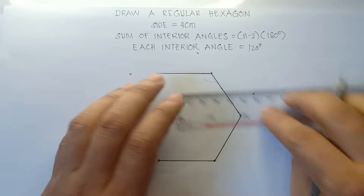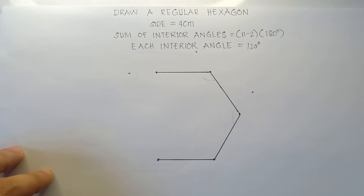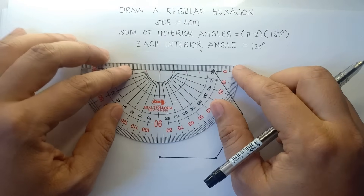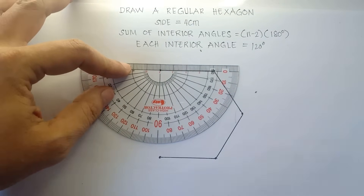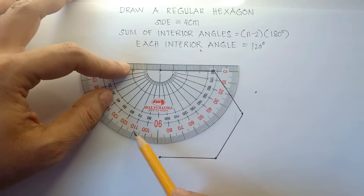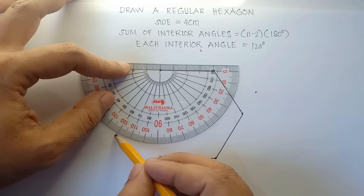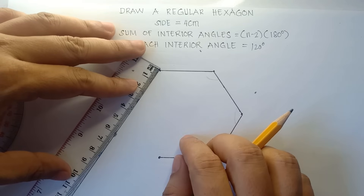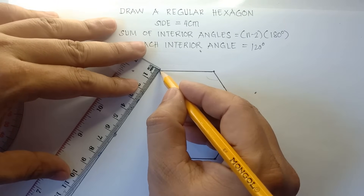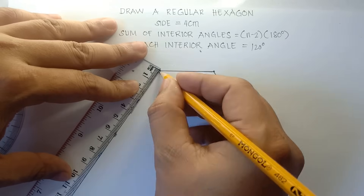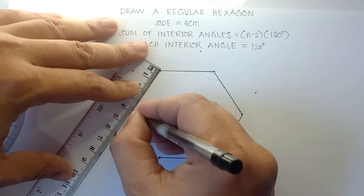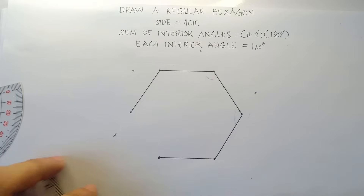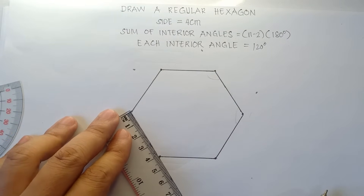And this will be our last point. From this last point, align 0 on this particular last side and align the last point on the center part of your protractor. Read 10, 20, 30, 40, 50, up to 120 degrees — that is our reference for the angle. Then sketch with your ruler, 4 centimeters. And then last one — let's check if this is 4 centimeters. Yes, that is exactly 4 centimeters.